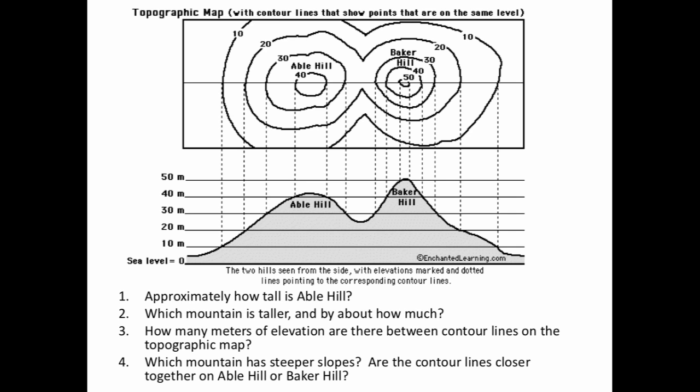Let's test our knowledge. We have two hills. We have Abel here and Baker. Approximately how tall is Abel Hill? Which mountain is taller and by how much? How many meters of elevation are there between the contour lines on the topographic map? Pretty much that's a fancy way of saying what is the interval. And which mountain has steeper slopes? Are the contour lines closer together on Abel or Baker? So go ahead and pause the video and answer these questions. And do label them 1, 2, 3, and 4.